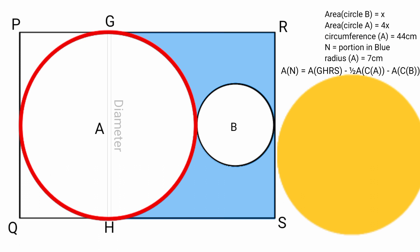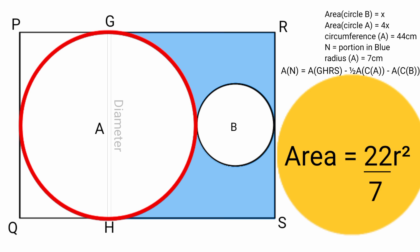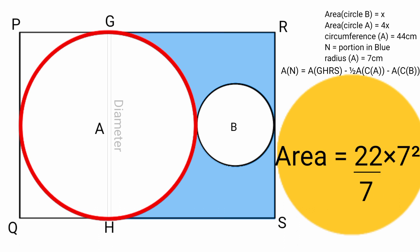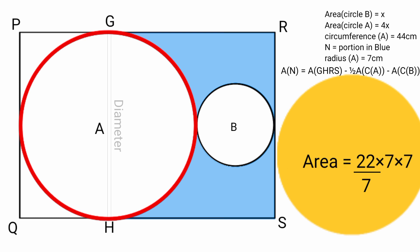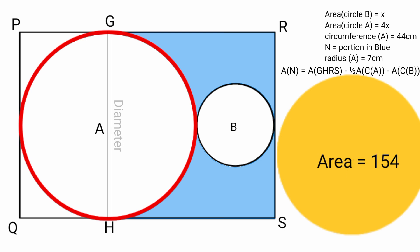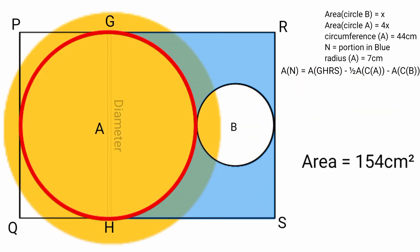To find the area of circle A, we use the formula πr². So area equals (22/7) × 7². Since 7 squared is 7 × 7, one factor of 7 cancels with the denominator, giving 22 × 7, which equals 154. The area of circle A is 154 centimeters squared.